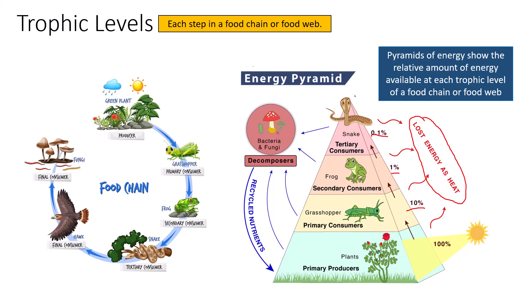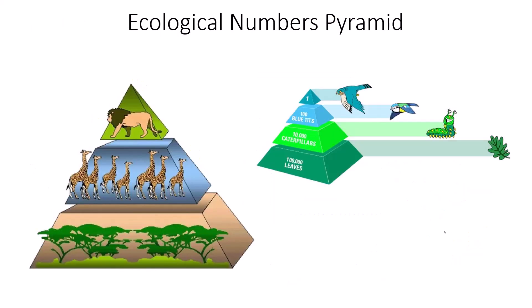Pyramids of energy show the relative amount of energy available at each trophic level of a food chain or food web — illustrating the energy available at each trophic level, which is roughly 10% of the level below it. This is the 10% rule.